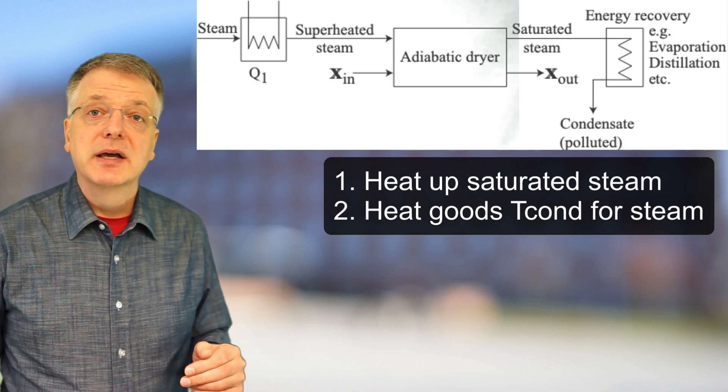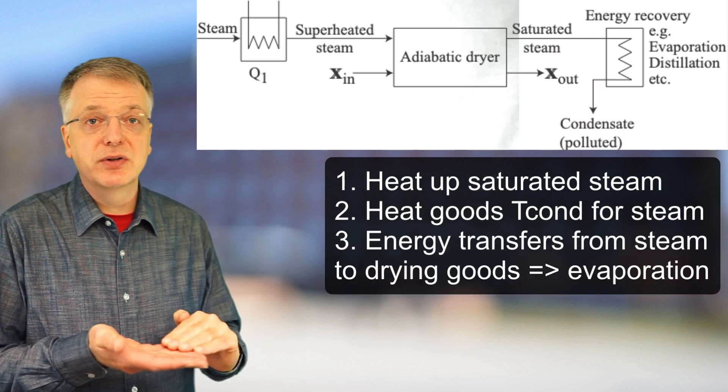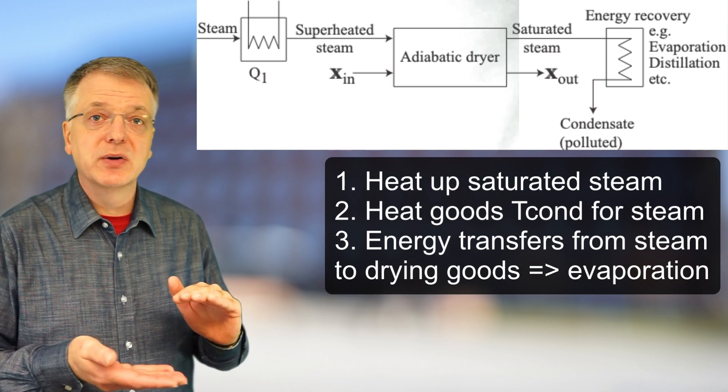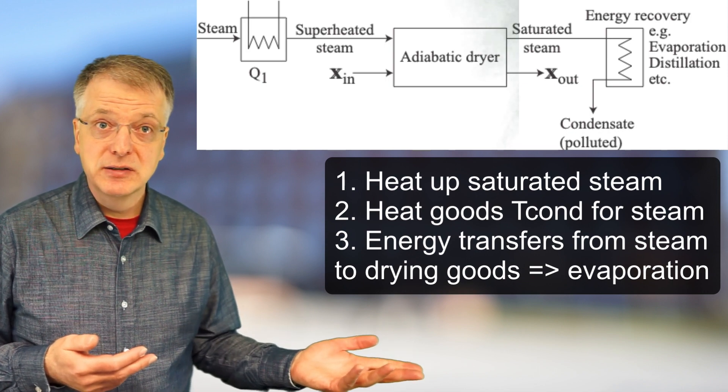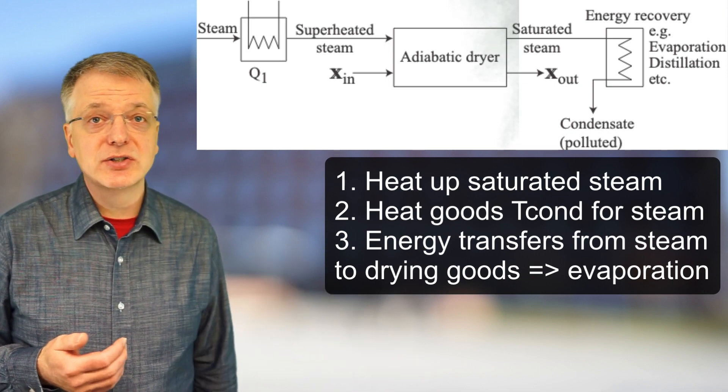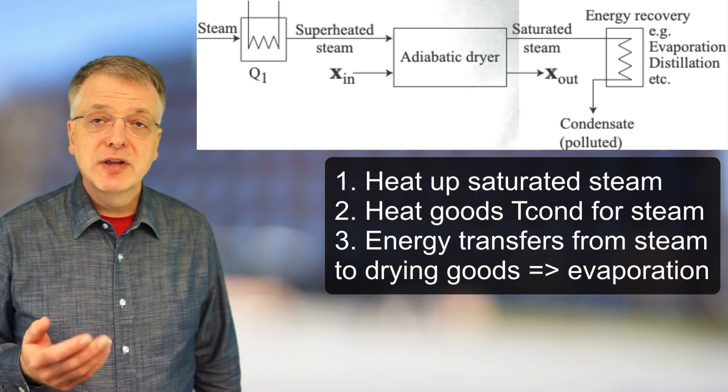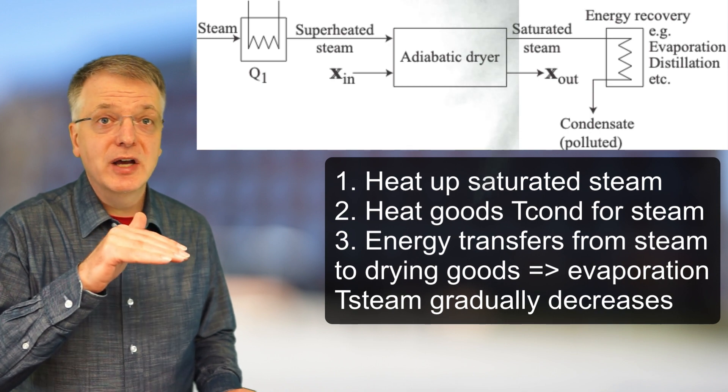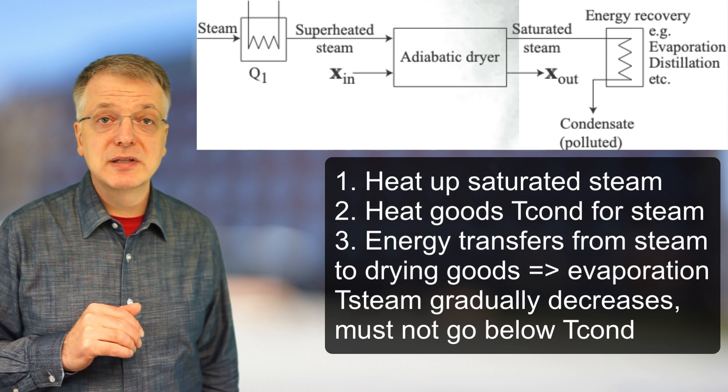In the adiabatic dryer, energy is transferred from the superheated steam to the drying goods, such that some of the water in the drying goods evaporates. The flow of steam out from the adiabatic dryer is thus slightly larger than the flow of steam into the dryer. The temperature of the steam gradually decreases in the dryer and the drying must end when the temperature approaches the condensation temperature of the steam.